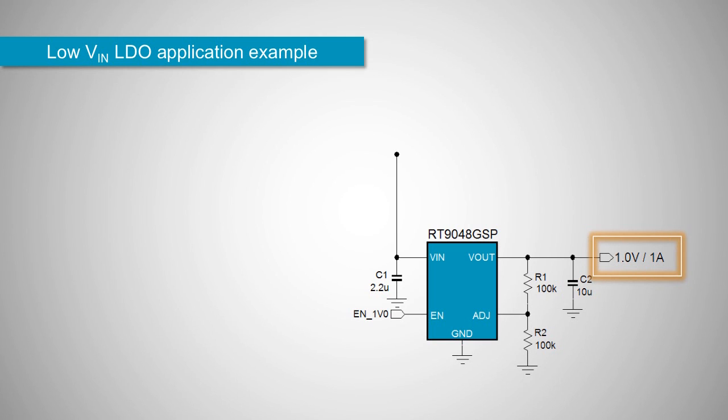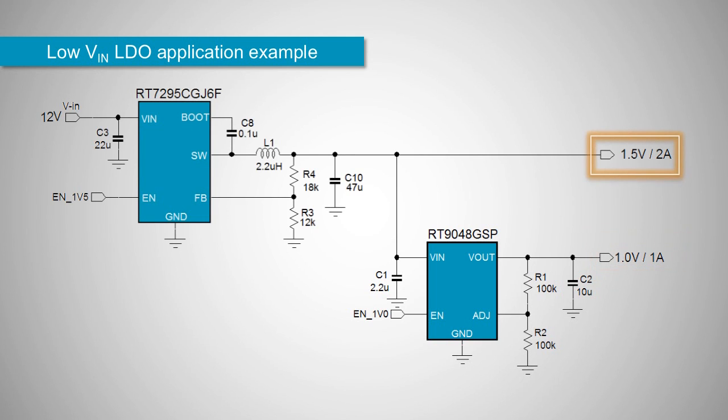To minimize the power dissipation in the LDO, you can drive the LDO from a 1.5 volt supply rail. The LDO voltage drop is only 0.5 volts and the maximum power dissipation is a manageable 0.5 watts. This makes a much more cost-effective solution than a separate buck converter.